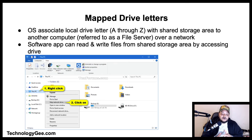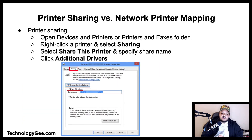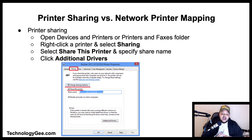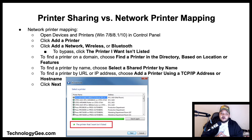Let's talk about printer sharing versus network printer mapping. Printers connected to network computers can be shared, or printers can be connected directly to a network with Ethernet or Wi-Fi connections. To perform printer sharing, open the Devices and Printers or Printers and Faxes folder, right-click a printer and select Sharing, select Share this printer and specify a share name. Click Additional Drivers to select additional drivers to install for other operating systems that will be used on the network for that printer.